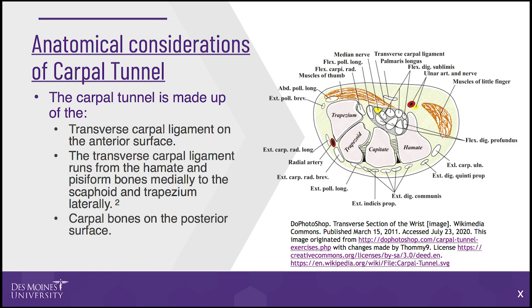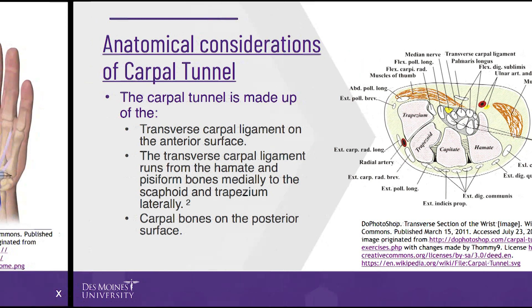The carpal tunnel contains ten structures: four tendons of the flexor digitorum profundus, four tendons of the flexor digitorum superficialis, the flexor pollicis longus tendon, and the median nerve, which is the most sensitive structure.